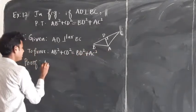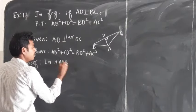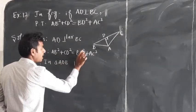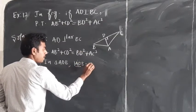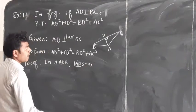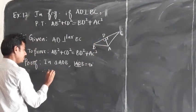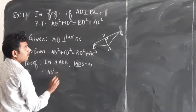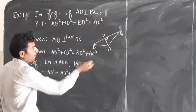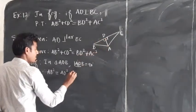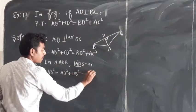In triangle ADB, angle ADB is equal to 90 degrees — it is given. Therefore, by Pythagoras theorem, AB square is equal to AD square plus DB square. We call this equation number 1.